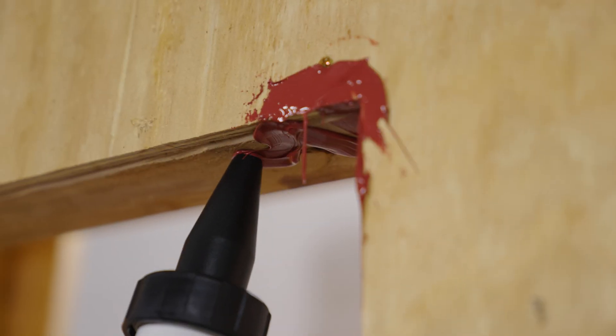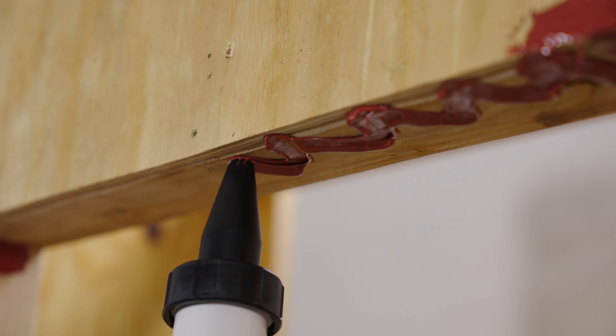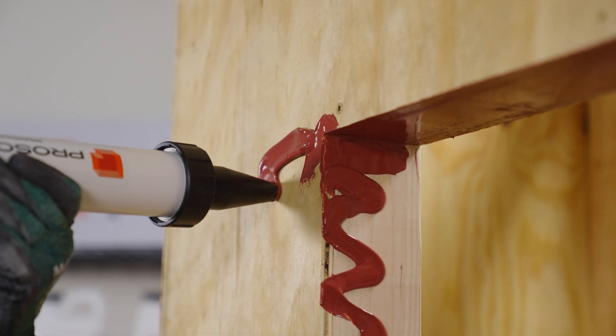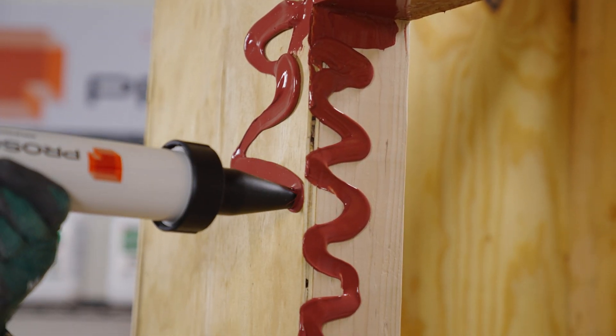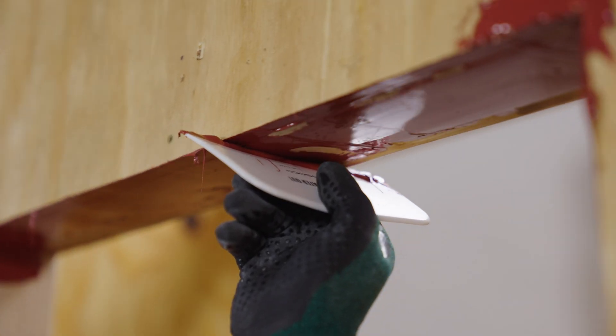When running through your rough opening with Fast Flash, the general rule of thumb is to start at the header. Run your sealant in a serpentine fashion on the overhead, and then again on the facade, on the face of the boards. You run the serpentine shape and then strike it with your Bondo knife.